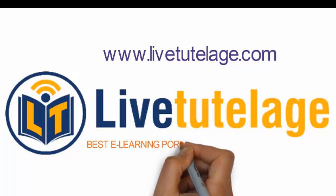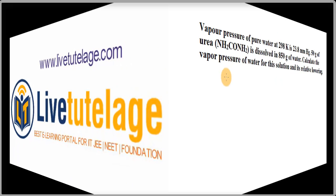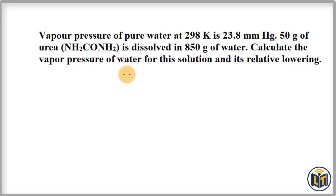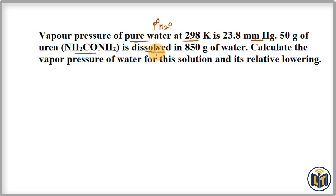Welcome to livetolace.com, best e-learning portal for IIT JEE and foundation. In this video I will discuss how to calculate the relative lowering of vapor pressure of a solution by using Raoult's Law. The problem states that the vapor pressure of pure water at 298 K is 23.8 mmHg, and 50 grams of urea is dissolved in 850 grams of water. The mass of solute and mass of solvent are given.